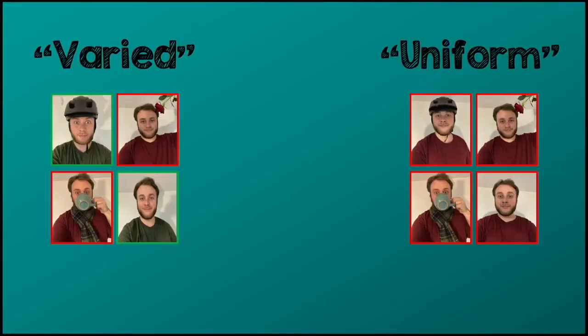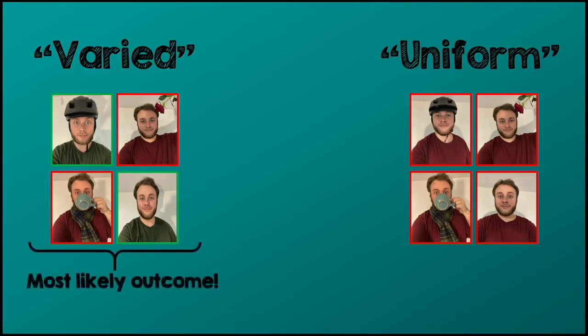Well, what does this tell us? If we were to pick four clones at random, it is more likely for us to see a varied mixture of red and green instead of seeing all clones wearing the same colour in a uniform fashion. It's as if nature itself favours variety. And if you can understand this, you can understand entropy.